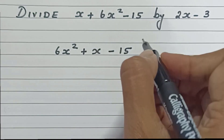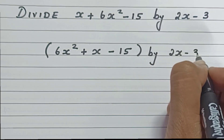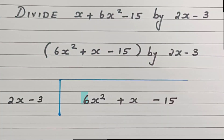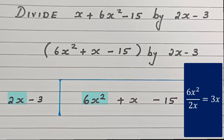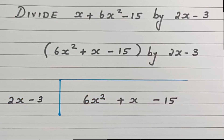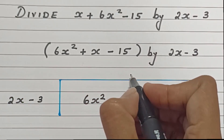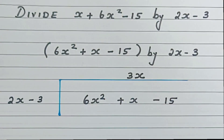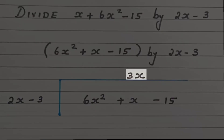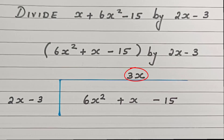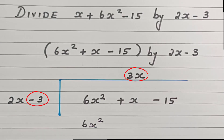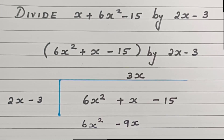So 6x squared plus x minus 15 divided by 2x minus 3. Step 2: we need to divide the first term of the dividend by the first term of the divisor. So 6x squared divided by 2x gives us 3x — that is, 2 times 3 is 6, and x squared divided by x is x to the power of 1. Our quotient is 3x. Now step 3: multiply the quotient with each term of the divisor. So 3x times 2x gives us 6x squared, and 3x times minus 3 gives us minus 9x.